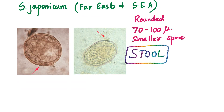Schistosoma japonicum is mainly reported from Far Eastern and Southeast Asian countries — China, Vietnam, Philippines, etc. — though it is now almost eliminated from Japan itself. The eggs are in stool, rounded or subspherical or oval, 70 to 100 microns in size, with a small spine that is relatively smaller than those of haematobium or mansoni.